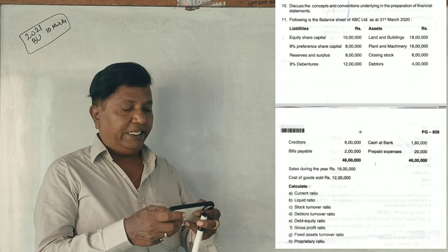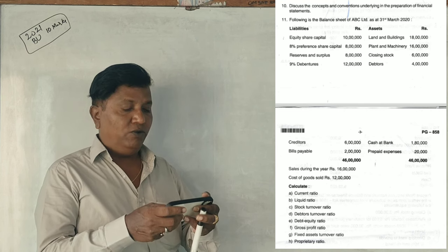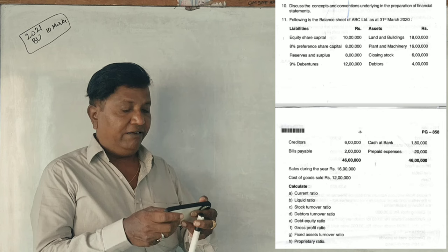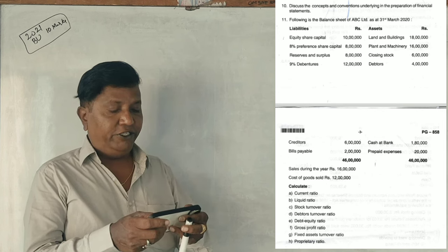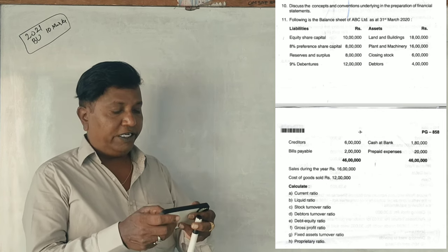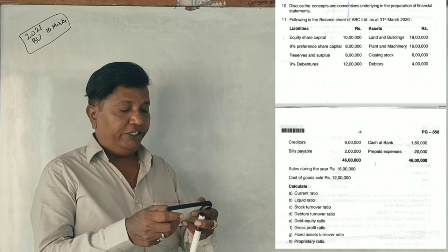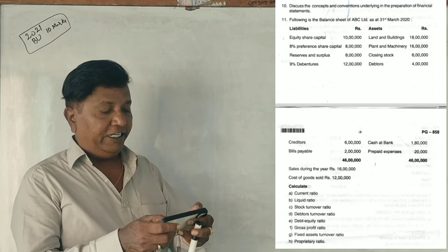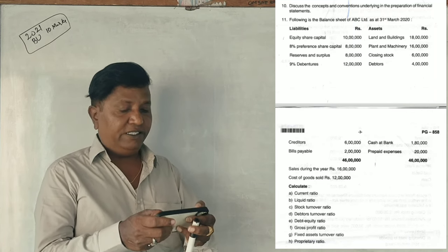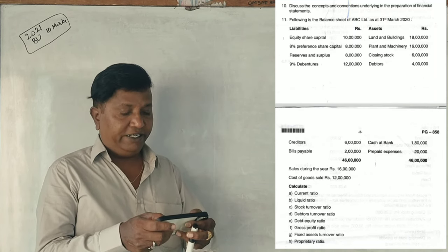Sales during the year is 16 lakhs. Cost of goods sold is 12 lakhs. Calculate: current ratio, liquid ratio, stock turnover ratio, debtors turnover ratio, debt equity ratio, gross profit ratio, fixed assets turnover ratio, and proprietary ratio.